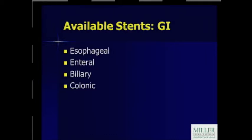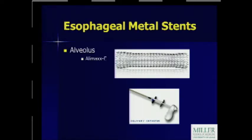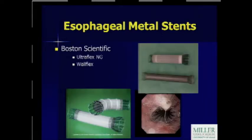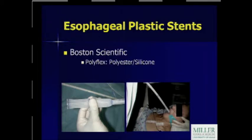From the GI standpoint, stents are available to be placed just about anywhere throughout the intestinal tract, and also for other organ systems — cardiac, lung, urology. With respect to metal stents, these are the three main companies with a wide variety of options. Alveolus makes an Alimax stent specifically for the esophagus. Boston Scientific has esophageal metal stents — the Ultraflex and Wallflex. Cook Medical's original was the Z-stent, but their newer stent is the Evolution stent. All these stents have evolved to accommodate surgeons and endoscopists to do things a bit different than originally designed.